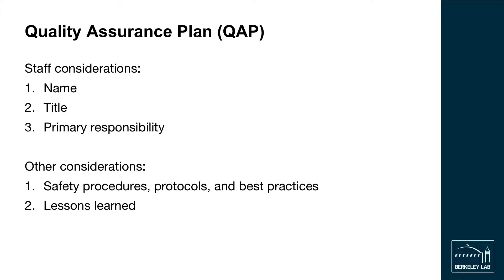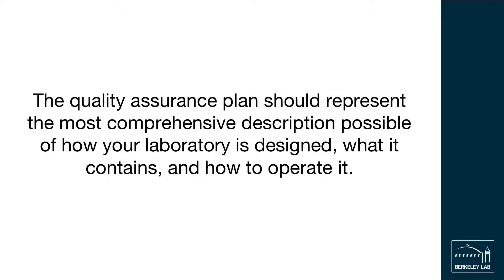When describing the roles and responsibilities of your staff, include their name, title, and primary responsibility. Your quality assurance plan may also include standard safety procedures, protocols, and best practices for working with cookstoves and equipment. It can also contain a history of lessons learned and how to avoid future mistakes. In general, the quality assurance plan should represent the most comprehensive description possible of how your laboratory is designed, what it contains, and how to operate it.